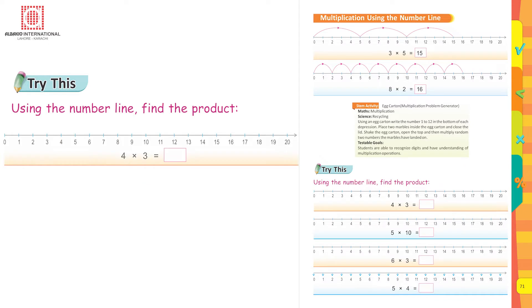Now try this: 4 multiplied by 3. You have to take four steps counting 3. Starting from 0, count till 3 — you land on 3. From 3 you land on 6, then 9, then from 9 you take the 4th step and land on 12. So 4 threes are 12. This is how you do the rest of the questions.